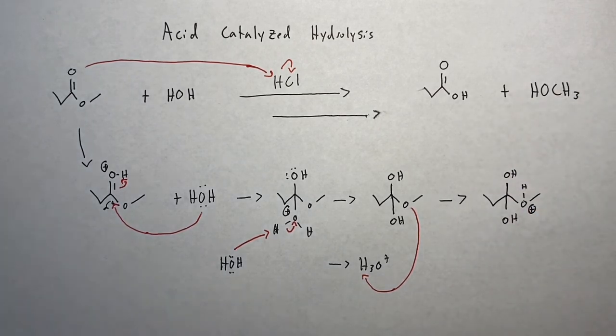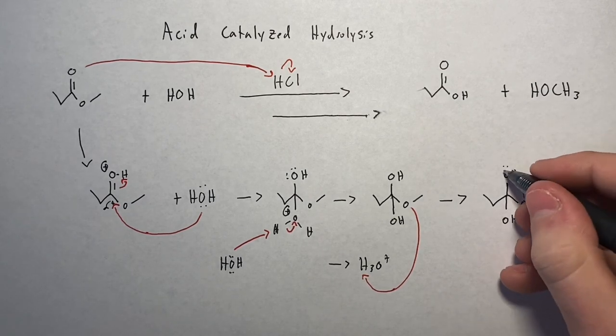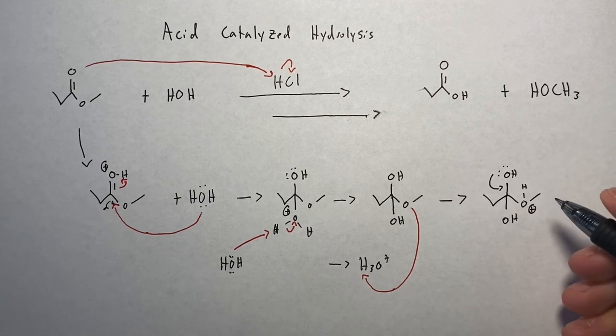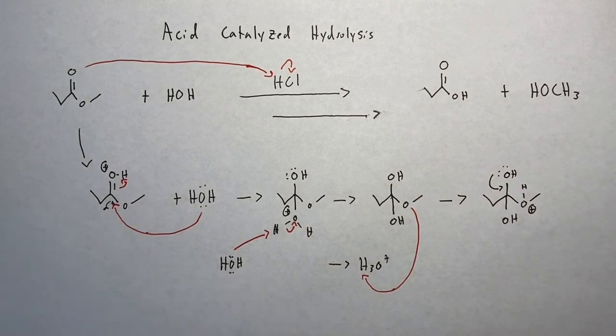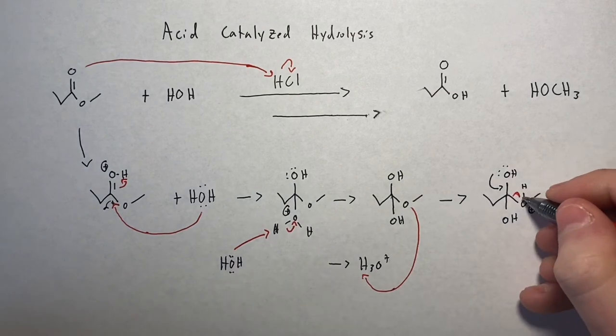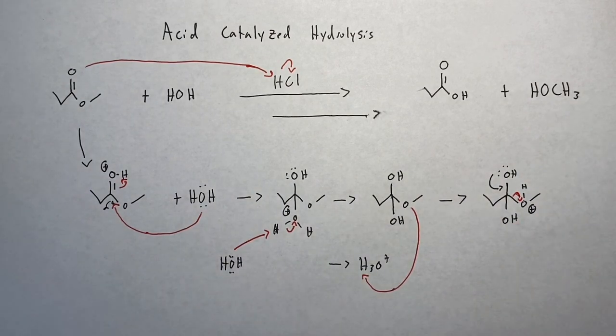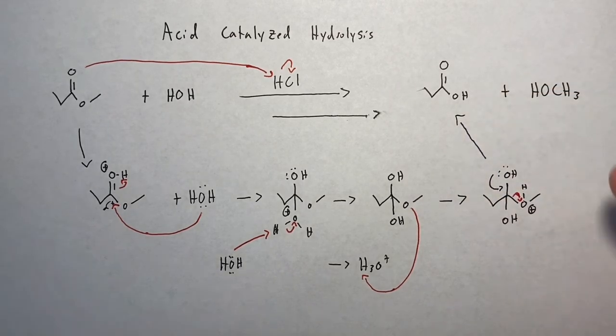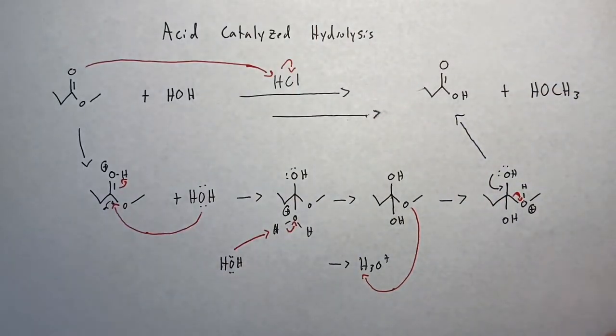So what we're going to do is just take these pi electrons and push them down. This hydrogen would get deprotonated in some way. And our leaving group will leave at this point, because it puts five bonds on carbon, and that can't happen. So we're left with our products, our carboxylic acid and our methanol.